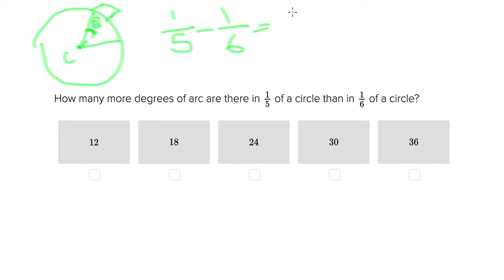You try to get the same denominator here. So that equals six over thirty minus five over thirty. And you end up with one over thirty.